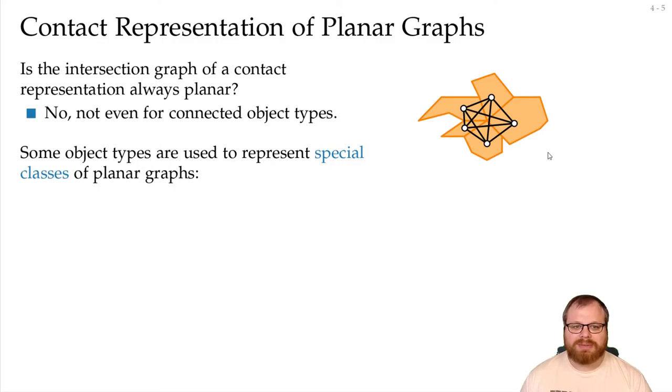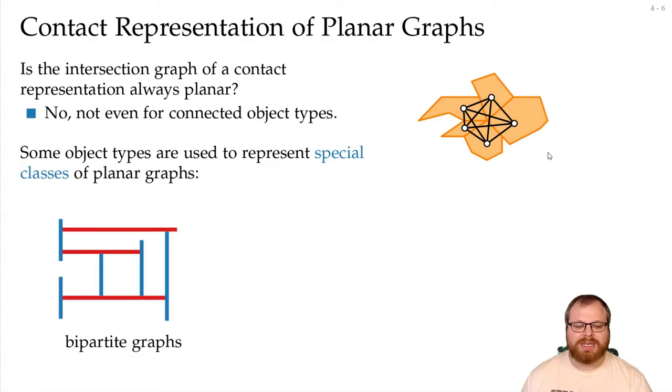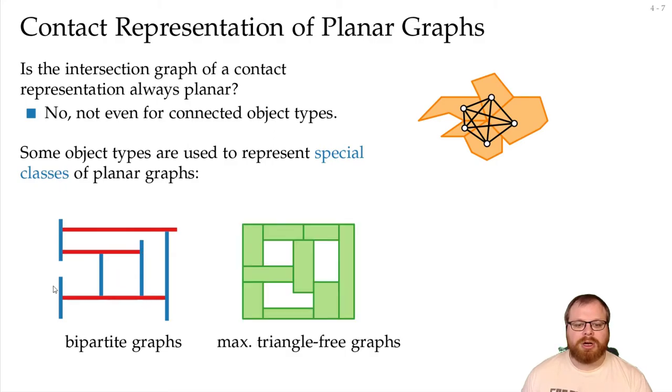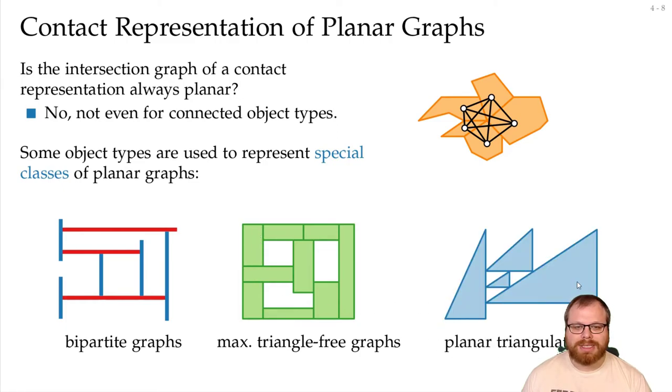But some object types can be used to represent special classes of planar graphs. For example, we can represent all bipartite graphs with horizontal and vertical segments, where one bipartition is drawn as horizontal and the other as vertical. We can do all maximal triangle-free graphs as contact representations of rectangles. And we can do all planar triangulations as contact representations of triangles with a right angle. And these are the types of contact representations that we want to have a look at in this lecture.